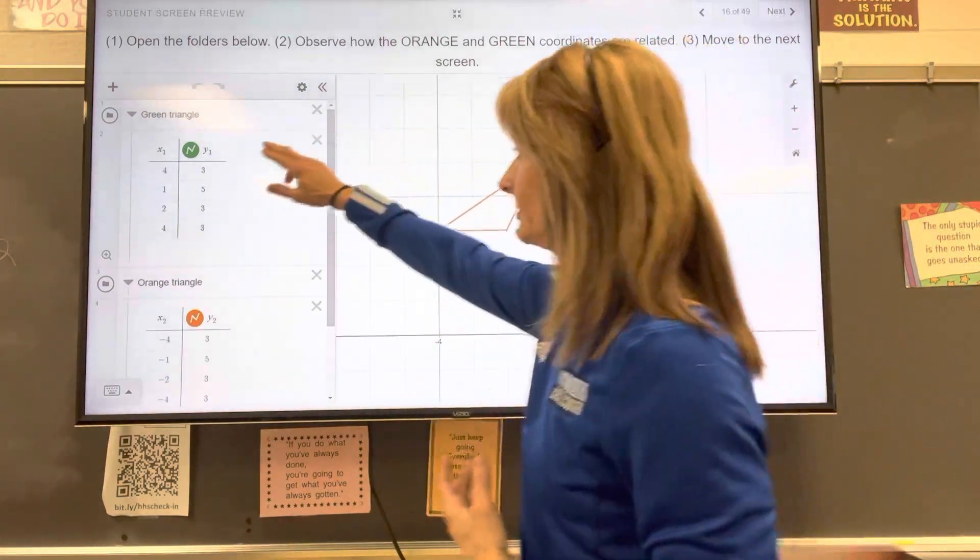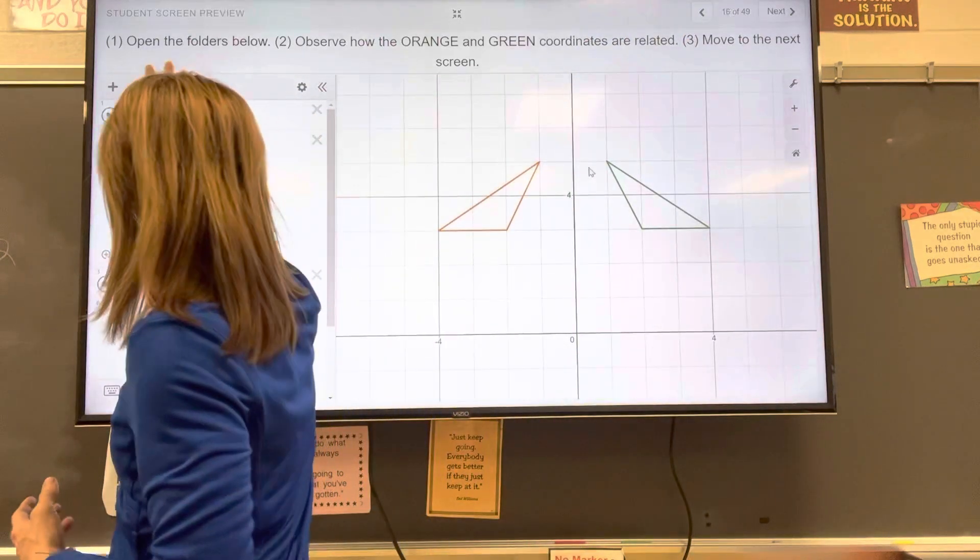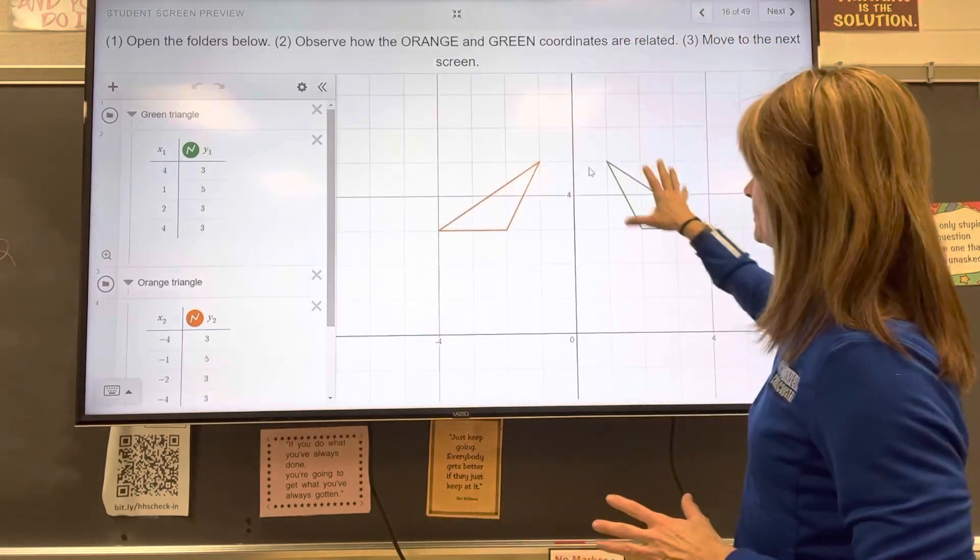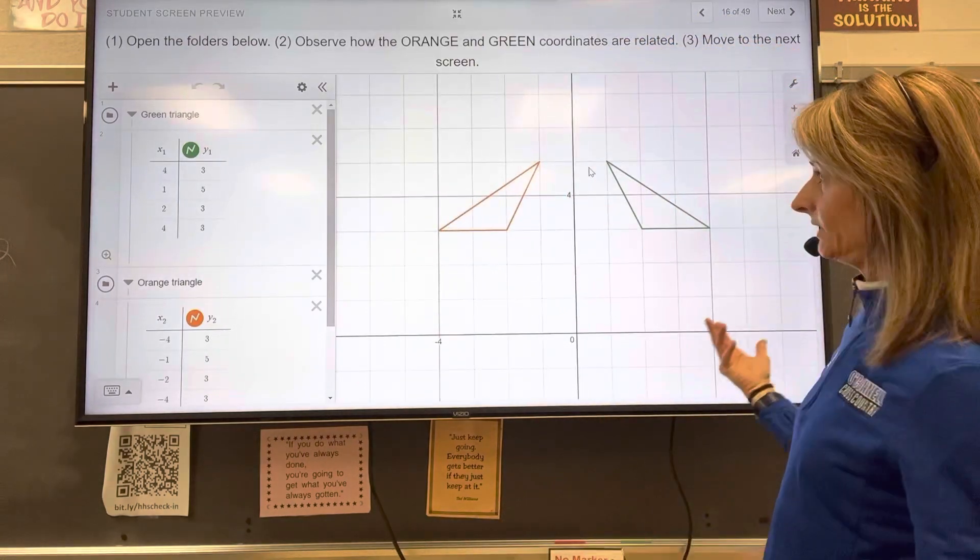So open the folders below. So go ahead and click on the arrow and it will open up these coordinates. And we're just going to take a look at the coordinates for each of these two triangles and see how they are related.